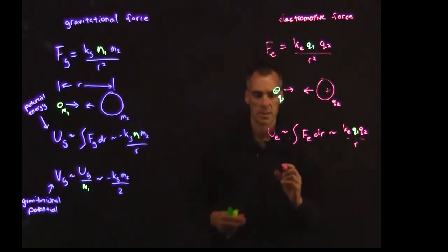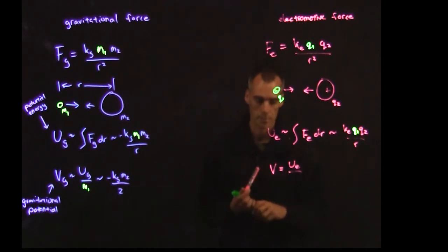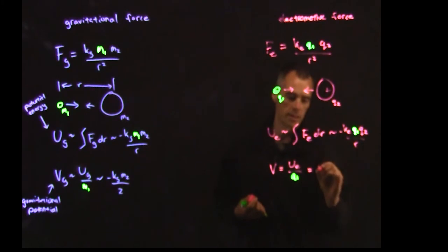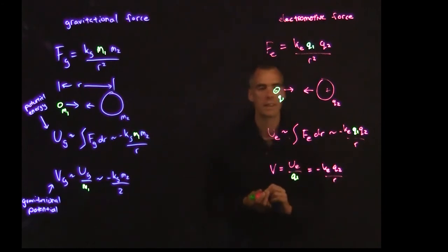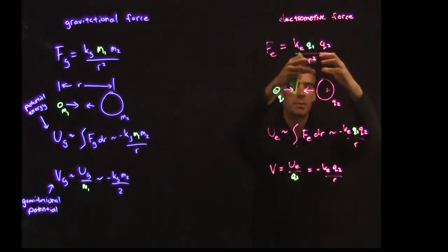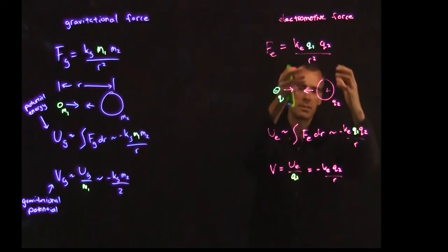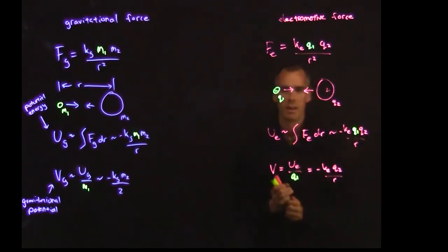Which is found as approximately k sub e q2 over r times q1, of course. And that electric potential we'll call v, that's the voltage, and that is just going to be u sub e over q1. And if we multiply that out, that's going to be negative k sub e q2 over r. You notice that we've gotten rid of that q1 in here, so we're just looking at what is that electric potential field that's surrounding q2, this bigger charge that we just kind of want to focus on. And that's what we use to determine voltage.